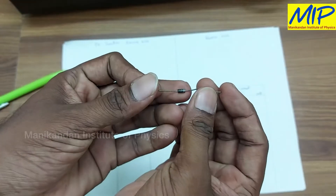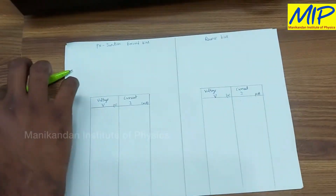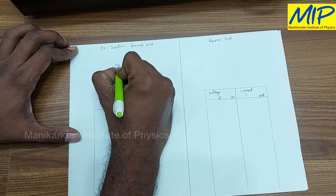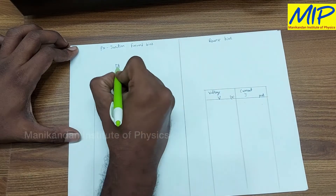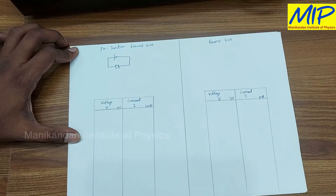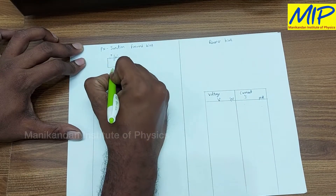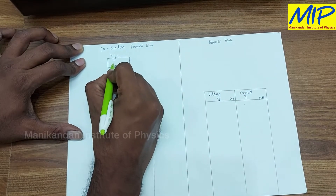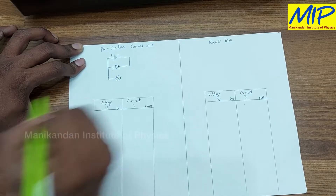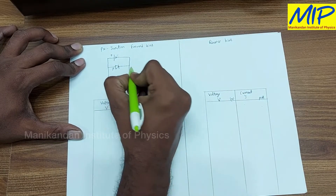First I will explain the theory part. This is my P-N junction diode — the silver line stands for the N-side, the black line stands for the P-side. Now I am going to draw the circuit diagram. When the P-side is connected with the positive terminal of the battery and the N-side with the negative terminal, it is forward bias. I will measure the voltage drop across the diode using a voltmeter and the current using an ammeter placed in the circuit.